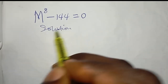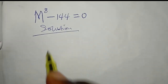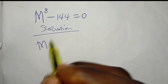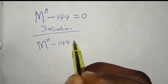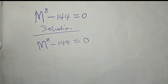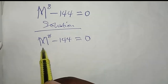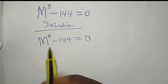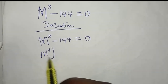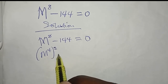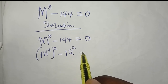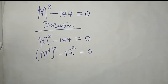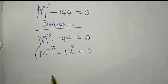I'd like to start by writing the solution. The question we are solving is m power eight minus 144 equals zero. I'm going to write m power eight as m power four, bracketed, squared, and I can also write 144 as 12 squared, so it equals zero. You can see that this is a difference of two squares.